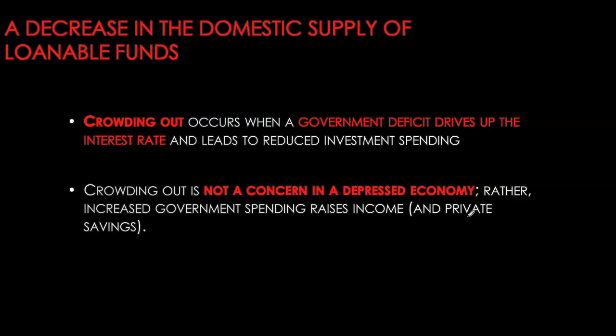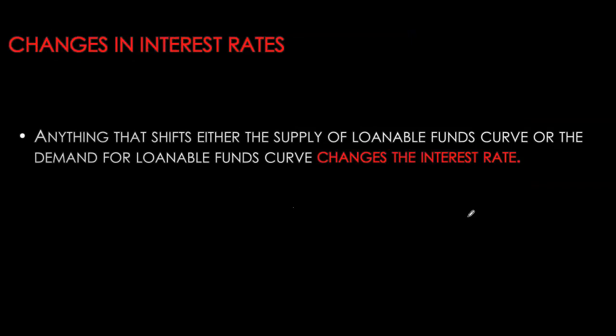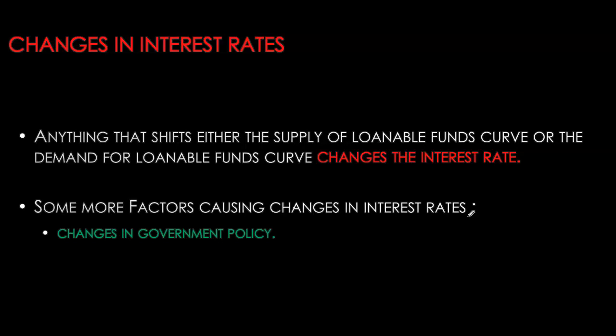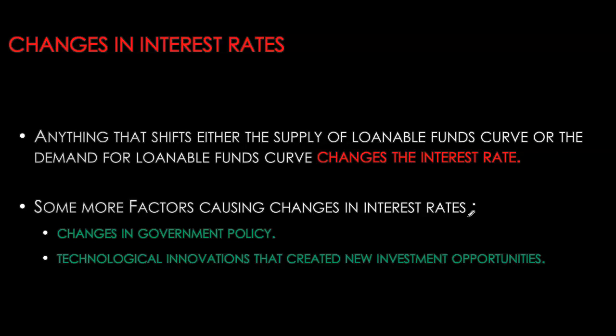Crowding out can be a huge concern if governments keep running consecutive deficits. However, for economies already in the middle of a big recession, increased government spending helps the economy recover — it creates more jobs, higher household income, and pushes GDP and economic growth in the right direction. Furthermore, increases in taxes on interest income reduce savers' incentive to save, decreasing supply of loanable funds and causing interest rates to rise. Technological innovations typically cause demand for loanable funds to increase, as firms seeking to adopt new technology look for external financing.